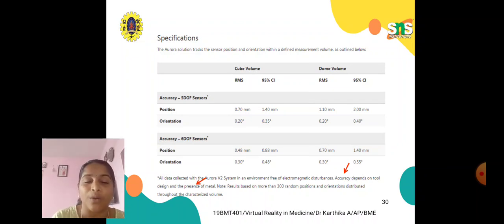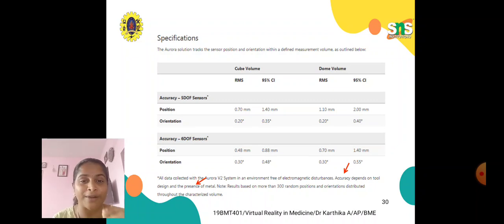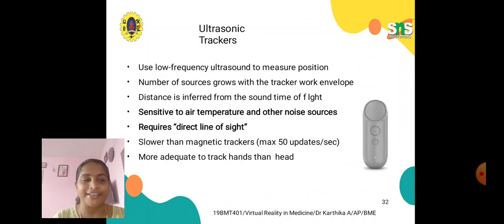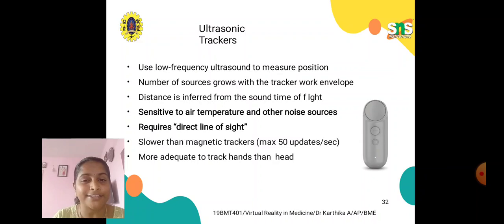All data collected with the Aurora V2 system is gathered in an environment free of electromagnetic disturbances; accuracy depends on tool design and the presence of metal. The results are based on more than 300 random positions and orientations distributed throughout the characterized volume. We need to inspect a 360-degree view for creating applications in virtual reality. In our next video, we are going to discuss about ultrasonic trackers in virtual reality medicine.